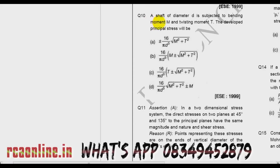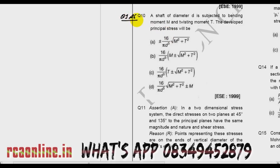Now come to question number 10. A shaft of diameter D is subjected to bending moment M and twisting moment T. The developed principal stress will be — this is a repetition question. If you watch my previous video, question number 1 and question number 5 are of the same type.